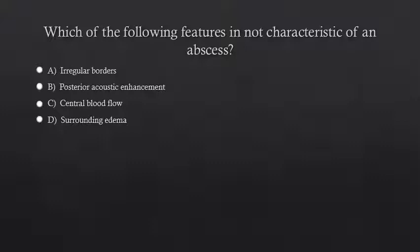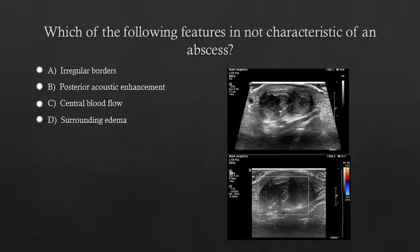Now take a moment to answer this question: which of the following features is not characteristic of an abscess? As we assess each answer choice, A is incorrect — abscesses tend to have irregular borders. B is incorrect because abscesses are fluid collections, and fluid collections are characterized by posterior acoustic enhancement, or brightness of the soft tissue deep to the fluid collection. Abscesses do not have central blood flow — they are fluid collections — therefore choice C is the correct answer. Abscesses show surrounding edema due to inflammation from the presence of infection. A characteristic abscess has irregular borders, posterior acoustic enhancement, and no internal blood flow.